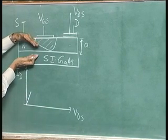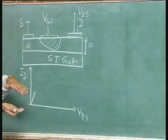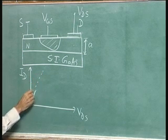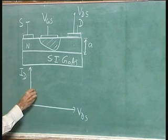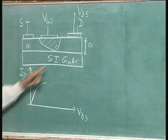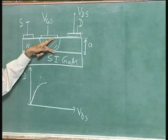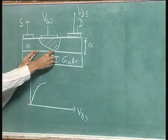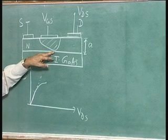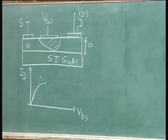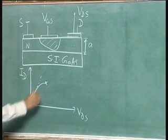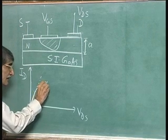Beyond that point, the shape of the depletion layer narrows and the shape of the resistor becomes narrower and narrower. Resistance goes up, therefore the current does not increase linearly — it deviates from linearity. At a particular point, when this depletion layer pinches off the channel completely, the voltage drop there is VDSAT. At that point, the channel has almost closed with a small opening left so that current enters and passes through. That is the saturation voltage.